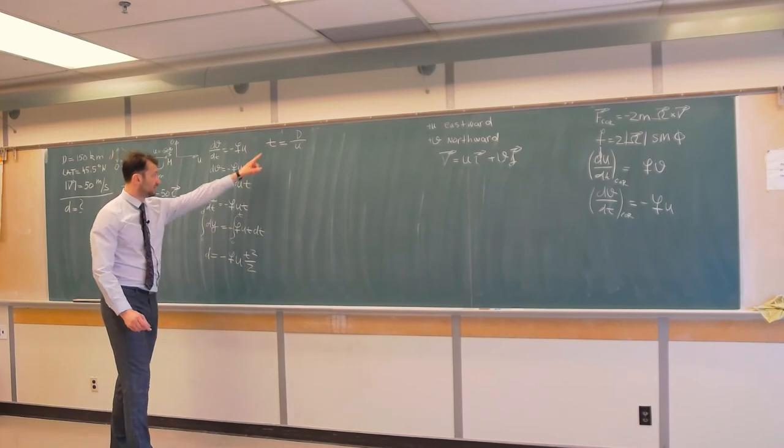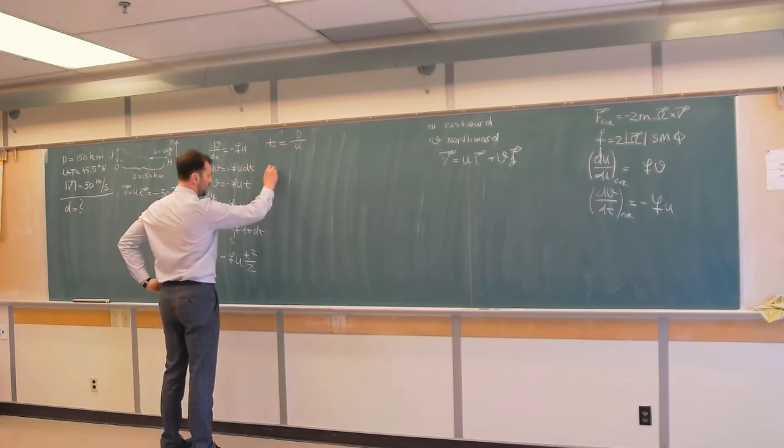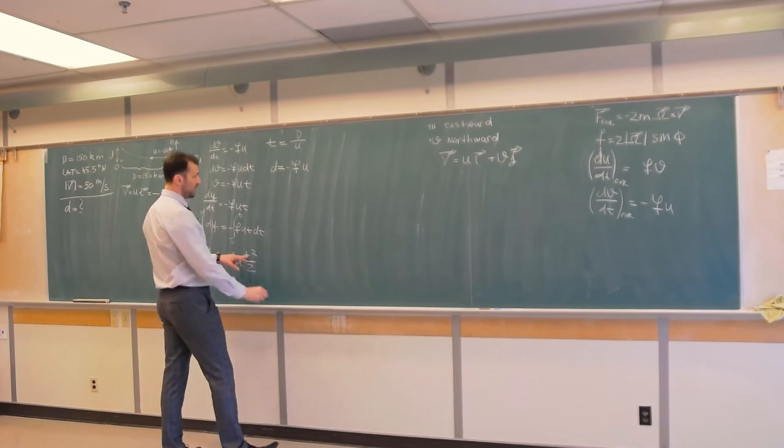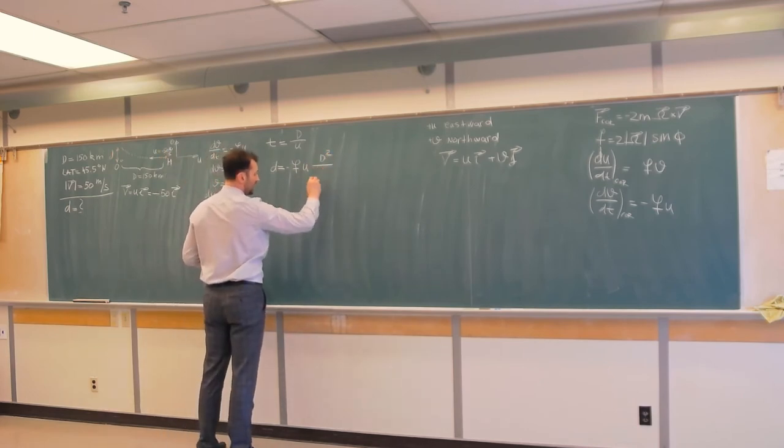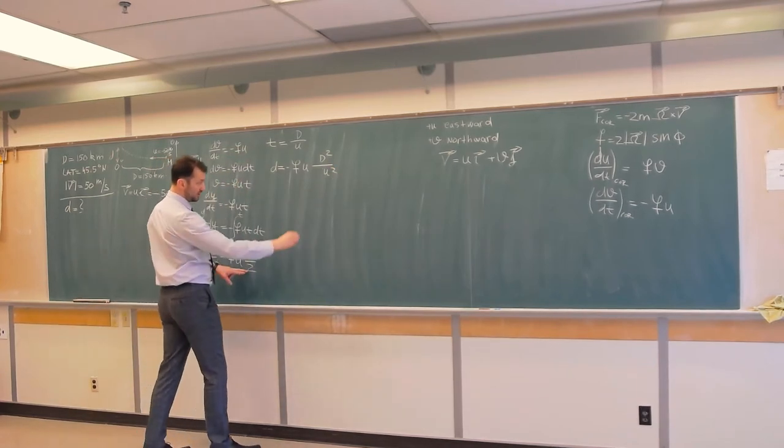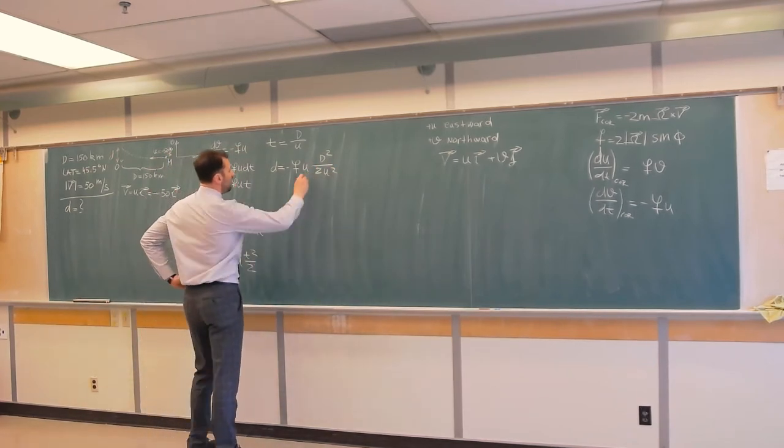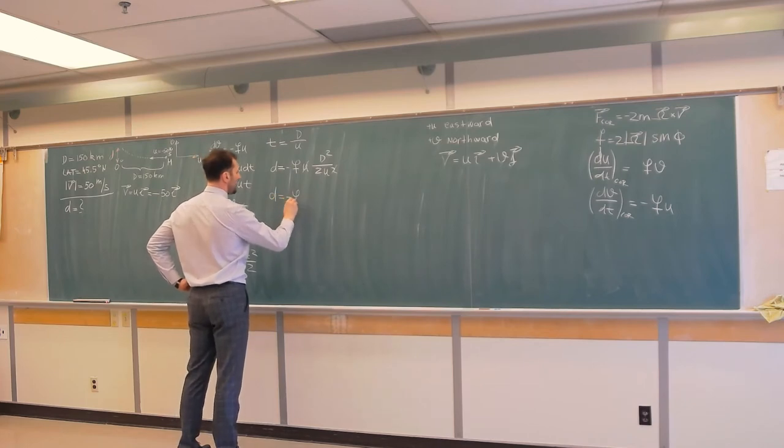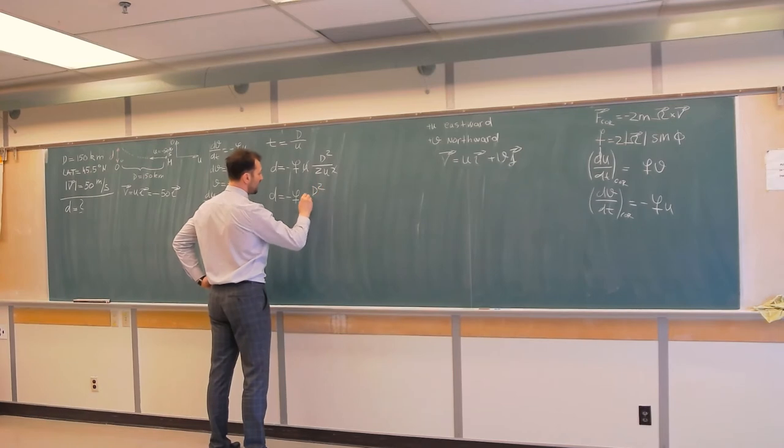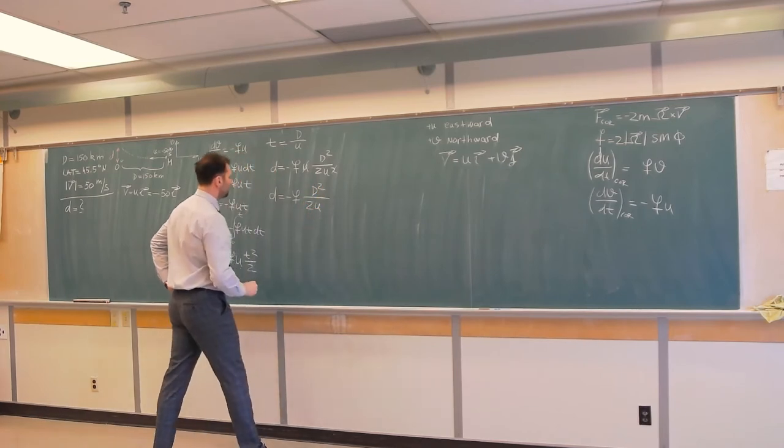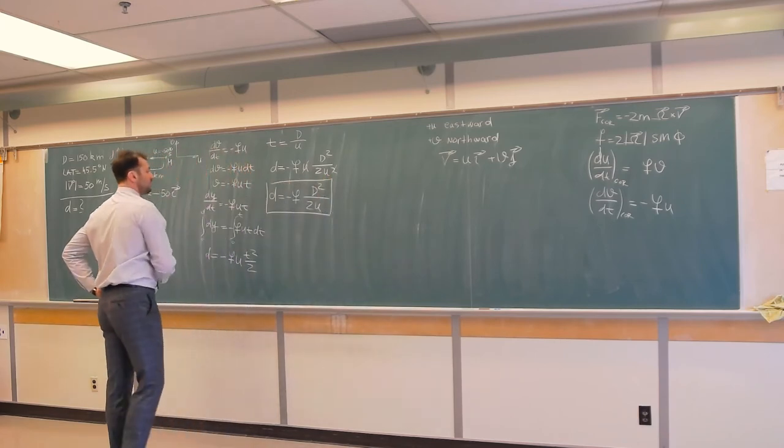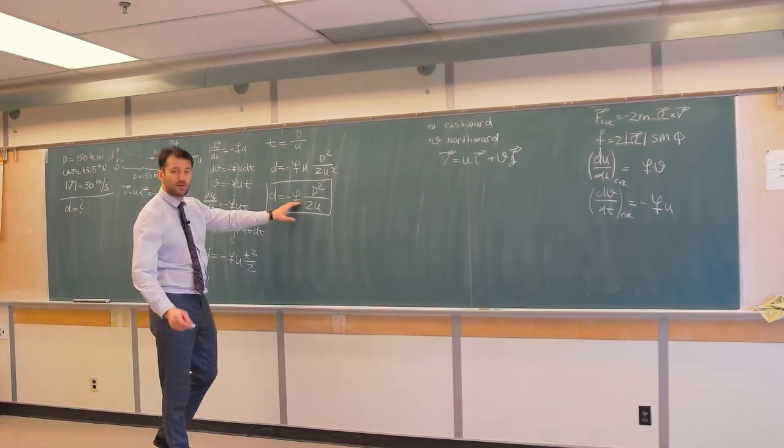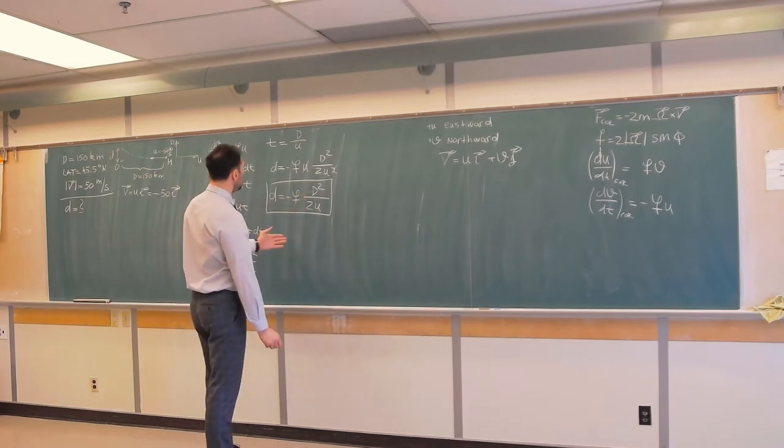So now we plug in that t, and we get that d is equal negative f times u times t squared, that will be D squared over u squared, and times this 2 in the denominator. Now, I cancel this u, and this squared, and I get that d is minus f D squared over 2u. And this is the solution for our problem, because we know latitude, if we know latitude, we know how to calculate f from problem number one in this mini-series. We are given D and we are given u.